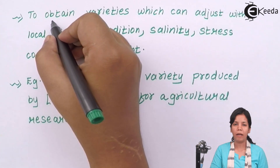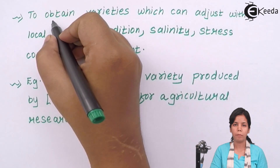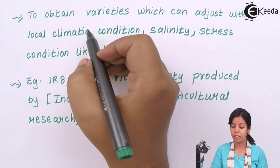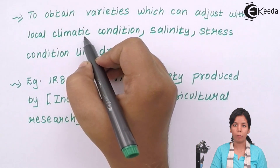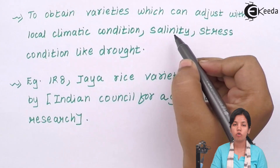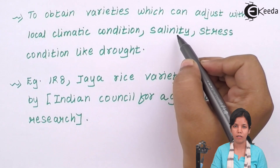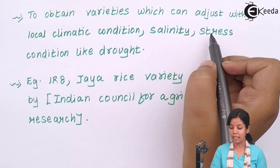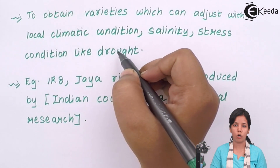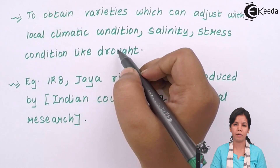While doing plant breeding, certain parameters are kept in mind. For example, the plant variety obtained should be able to adjust to local climatic conditions. Next, the plant variety should be able to withstand salinity, meaning the presence of salt in water. It should also be able to withstand stress conditions like drought, that is shortage of water, and should be able to survive in hot and humid temperatures as well.